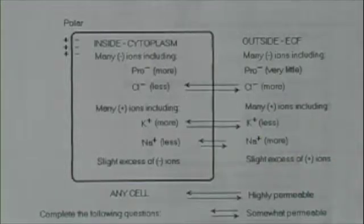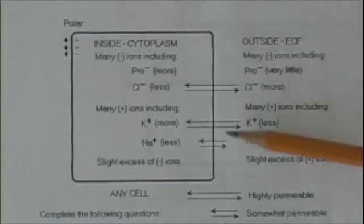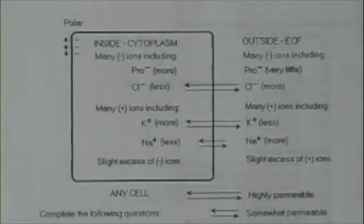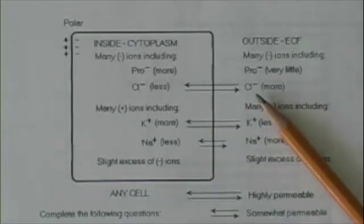But with ions, there's another force at work. Remember, unlike charges attract, and like charges repel. We said the outside of the cell is slightly positive. The inside is slightly negative. Chloride ions are negative.